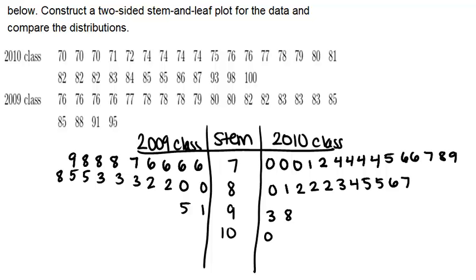Now we want to compare the distributions. In both classes, there was a fairly big range in scores from 70 up to about 100. In 2009, no one got 100 — someone got 95, which is close. In both years, the majority of students scored in the 70s and 80s. The mode for 2010 was 74 and the mode for 2009 was 76. Overall, both classes did about the same, though 2010 had students who scored 100 and 98, which were higher than anyone in 2009.